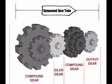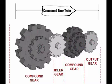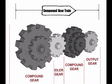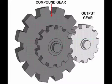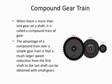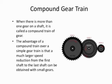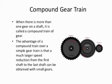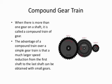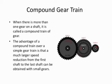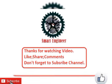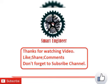An important thing to be noted is that the angular speed of the intermediate gears is equal. A compound gear train is used when a large change in speed or power is required. The advantage of a compound gear train over a simple gear train is that a much larger speed reduction from the first shaft to the last shaft can be obtained with small gear steps.